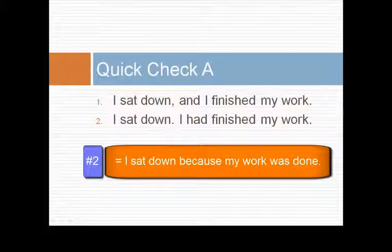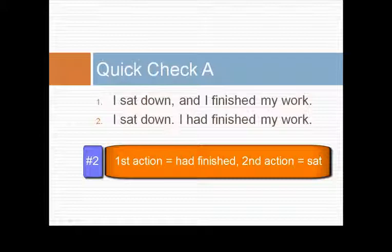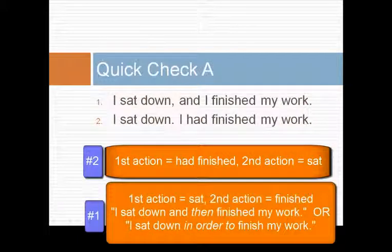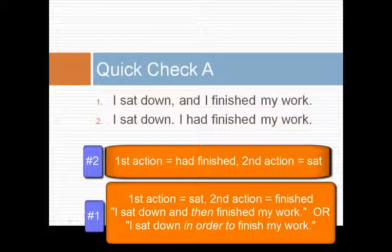The answer is number two. First, I finished my work and then I sat down. So the past perfect refers to the earlier of two actions. In contrast, the first statement means I sat down and then I finished my work. I sat down perhaps in order to finish my work.